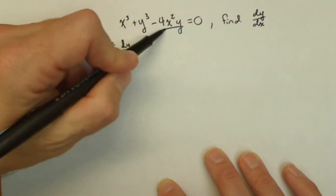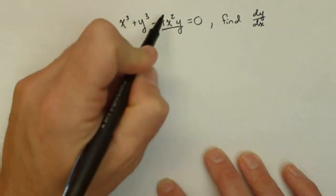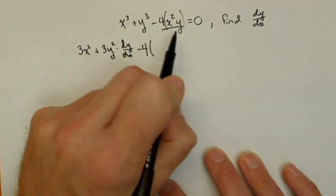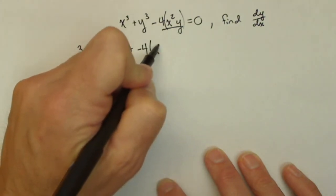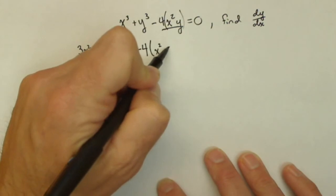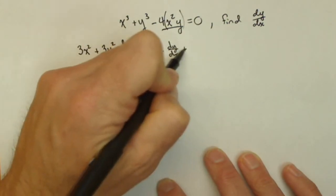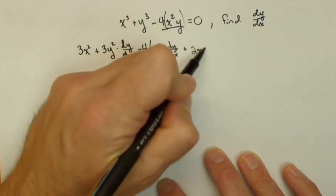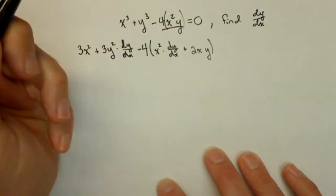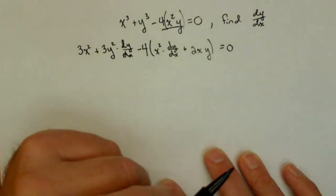Now, this term, the minus 4x²y, well, what I'm going to do is I'm going to do minus 4, and then I'm going to do a product rule on the x²y. So I hold the x² constant times the derivative of y, which as we said is dy/dx, plus, now the derivative of x², which is 2x, and we're going to hold the y constant, which is y. And it equals 0.